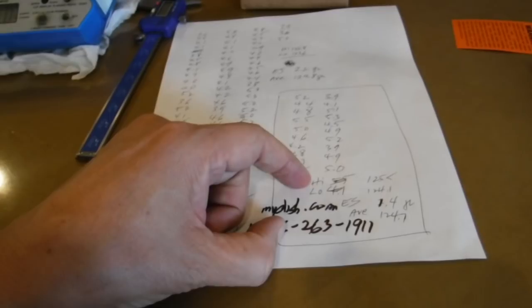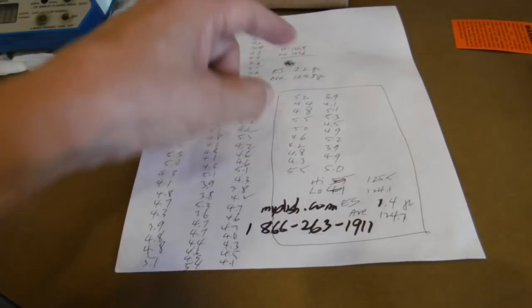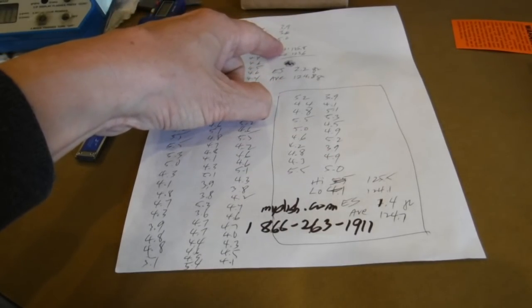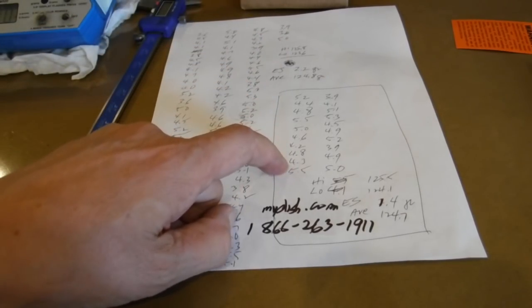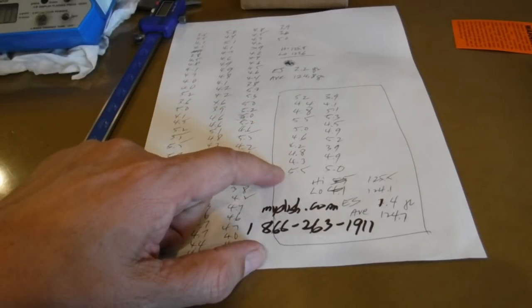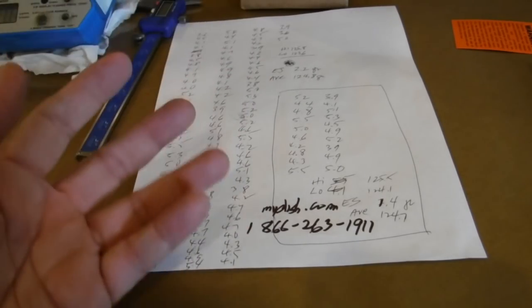It gave us a high of 125.5 instead of 125.8. So that heavy casing didn't get found in the 20. And why would it be, since we're only taking one out of every five?